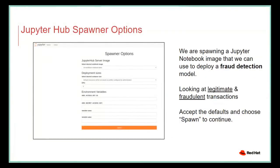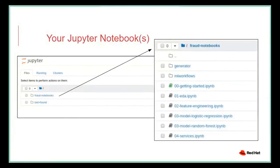When JupyterHub opens, we first have an option to determine the type of notebook to use. We'll select a basic machine learning workflow notebook to deploy a fraud detection model — looking at legitimate and fraudulent transactions in a bank. We accept the defaults and choose Spawn to continue. I've pulled in notebooks through a Git repository, and in the Jupyter Notebook we can see the feature engineering, logistic regression, and services notebooks used to deploy the fraud detection model.